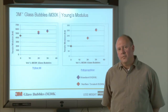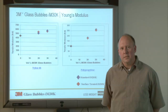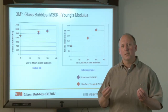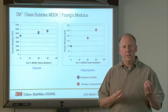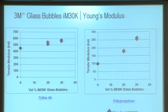The third benefit is the improvement in stiffness of the plastic composite. As we put stiffer glass particles into ductile plastic, the more we put in, the stiffer the plastic composite becomes. Here we're showing Young's modulus for nylon on the left and polypropylene on the right, and we can see the increased stiffness of the composite as we increase the level of glass bubbles.